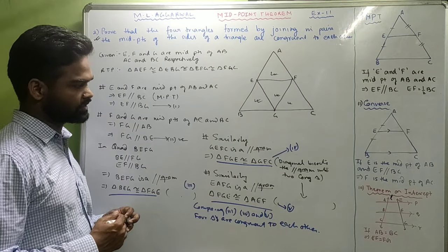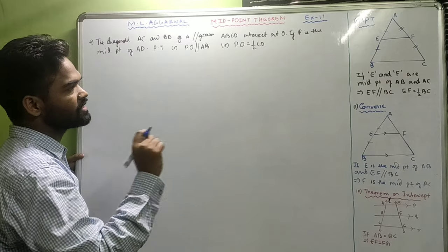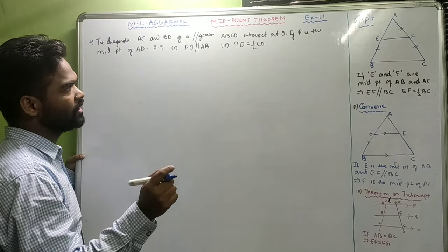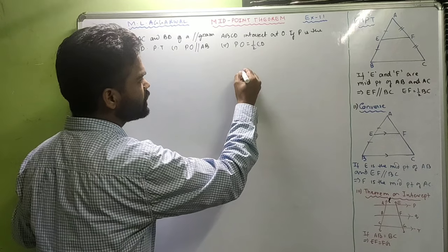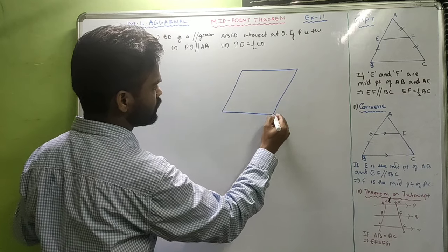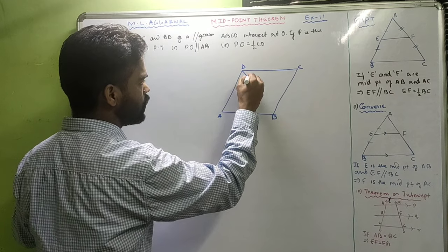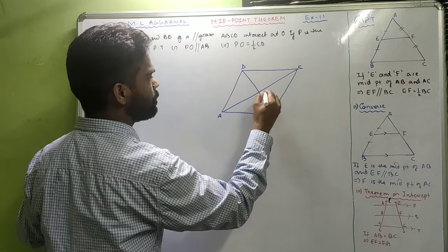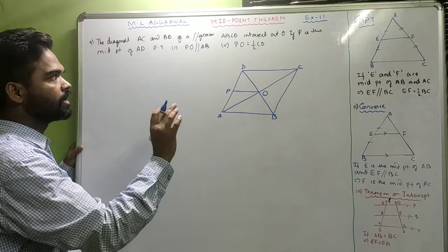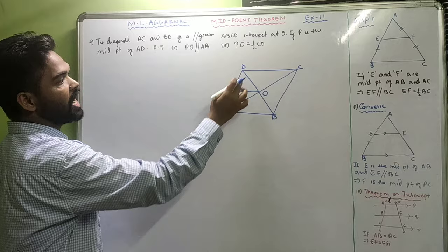Now let us look at sum number 4. The diagonals AC and BD of a parallelogram ABCD intersect at O. If P is the midpoint of AD, prove that PO is parallel to AB and PO is half of CD. Let us first draw the parallelogram ABCD whose diagonals bisect at O, and P is the midpoint of AD.